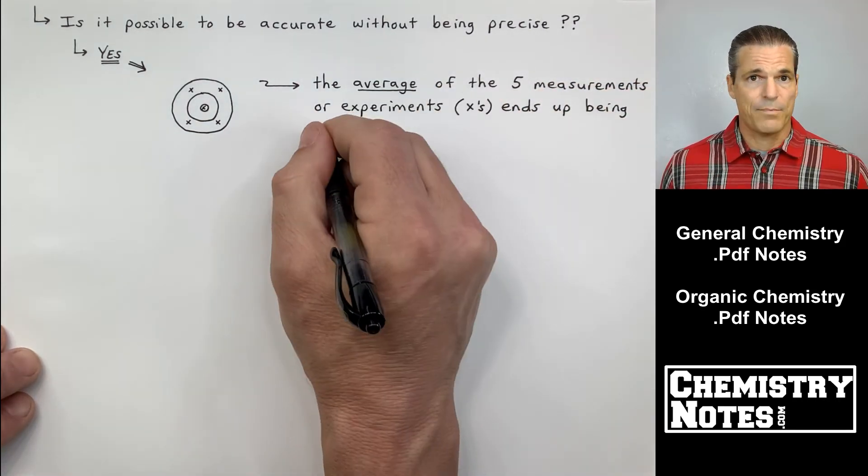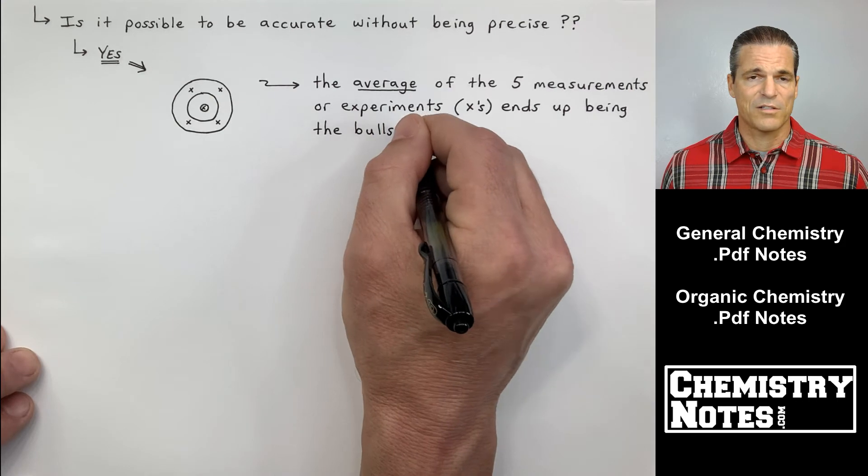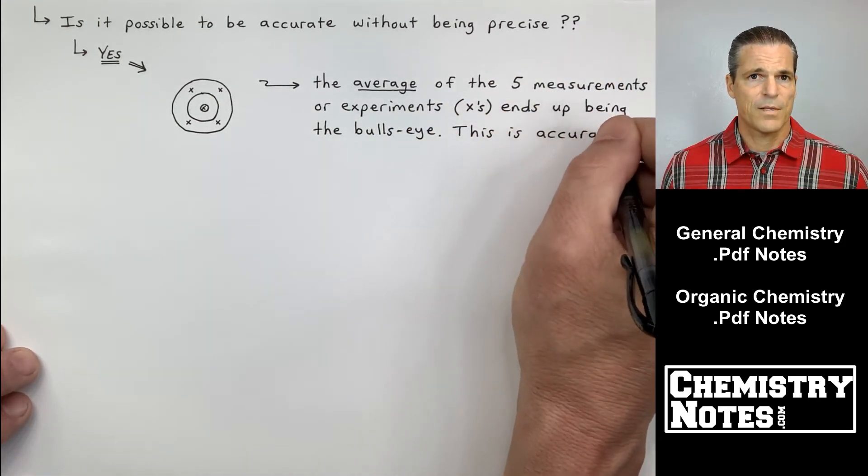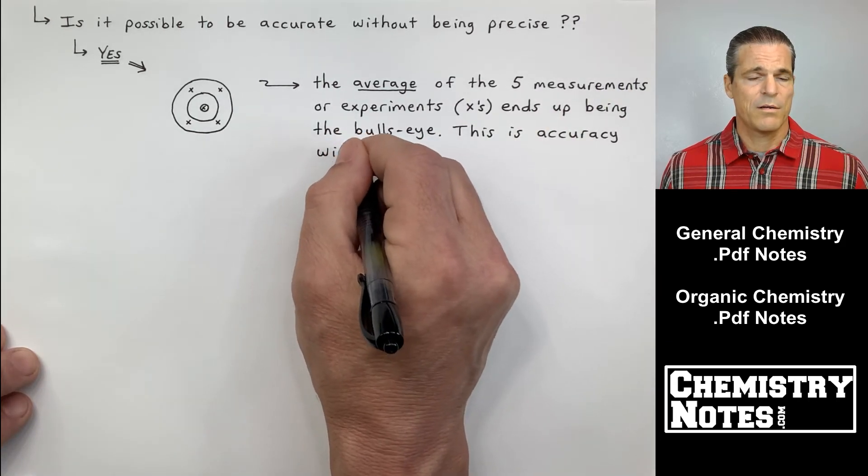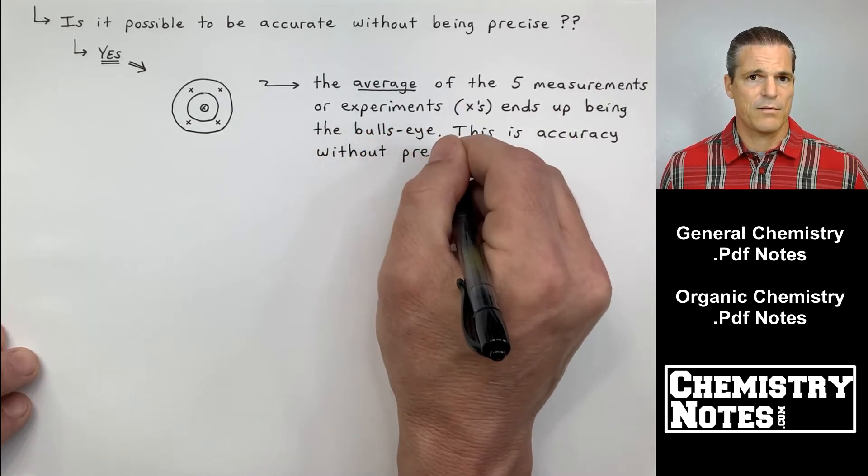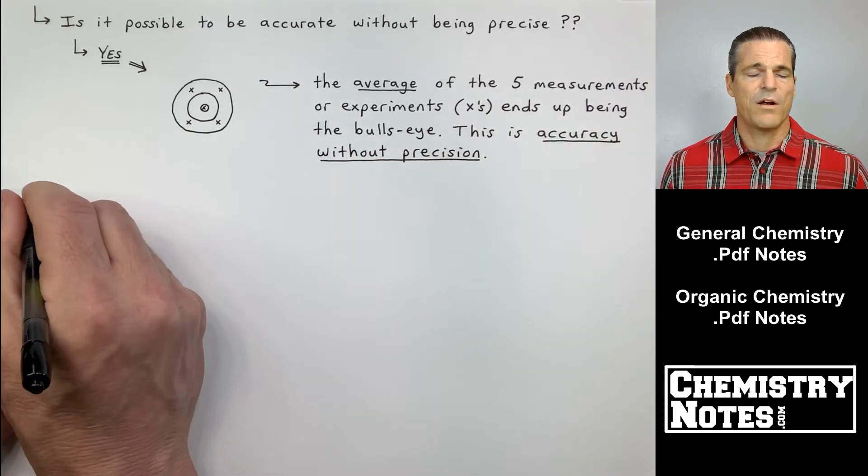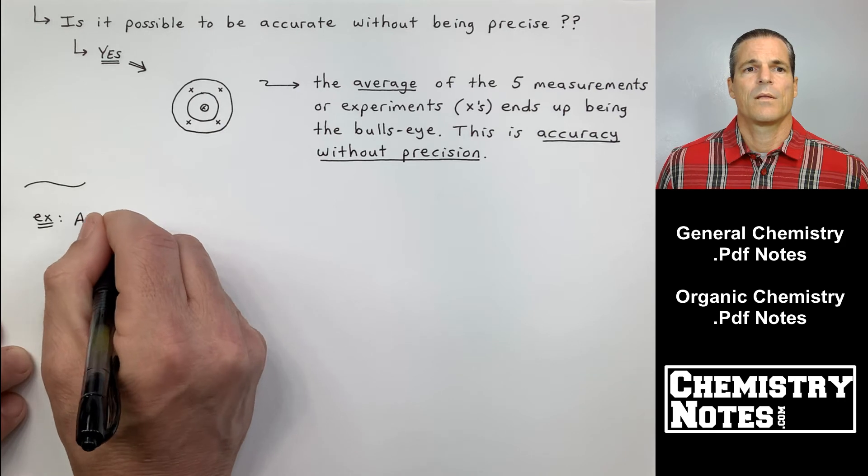So we're not precise because the darts are not all on top of each other. So we have no precision, which means we have a lot of human error, but we're accurate. So this is accuracy without precision. Very uncommon, but it does exist.